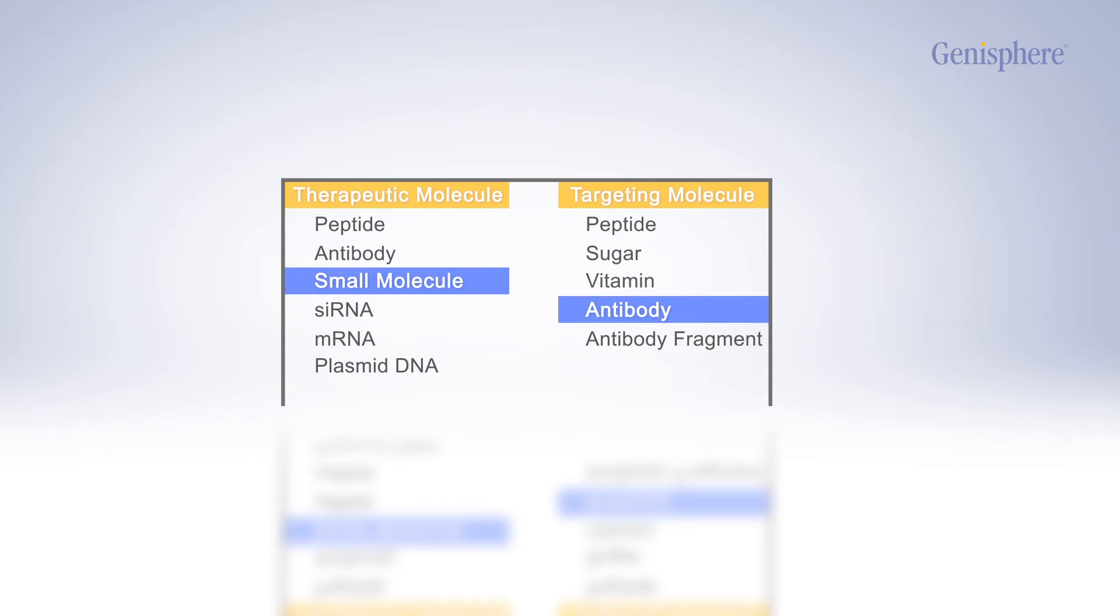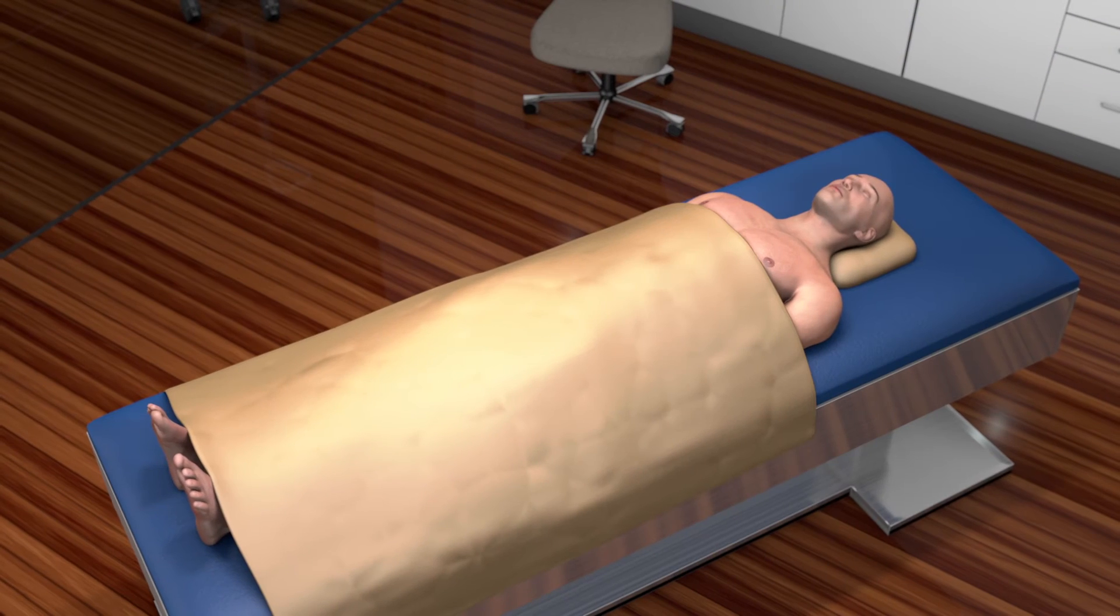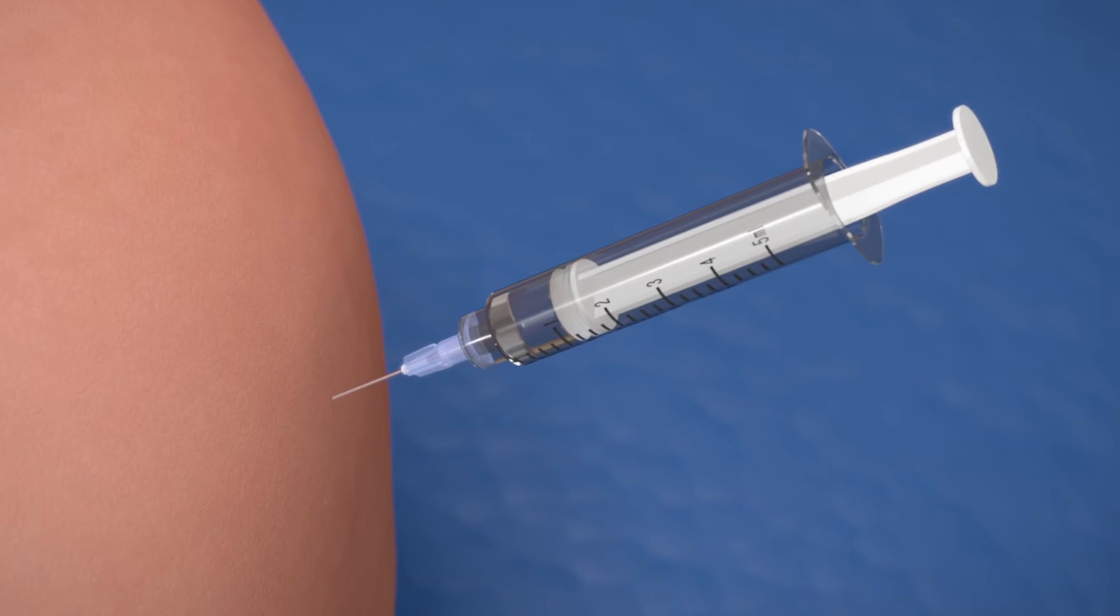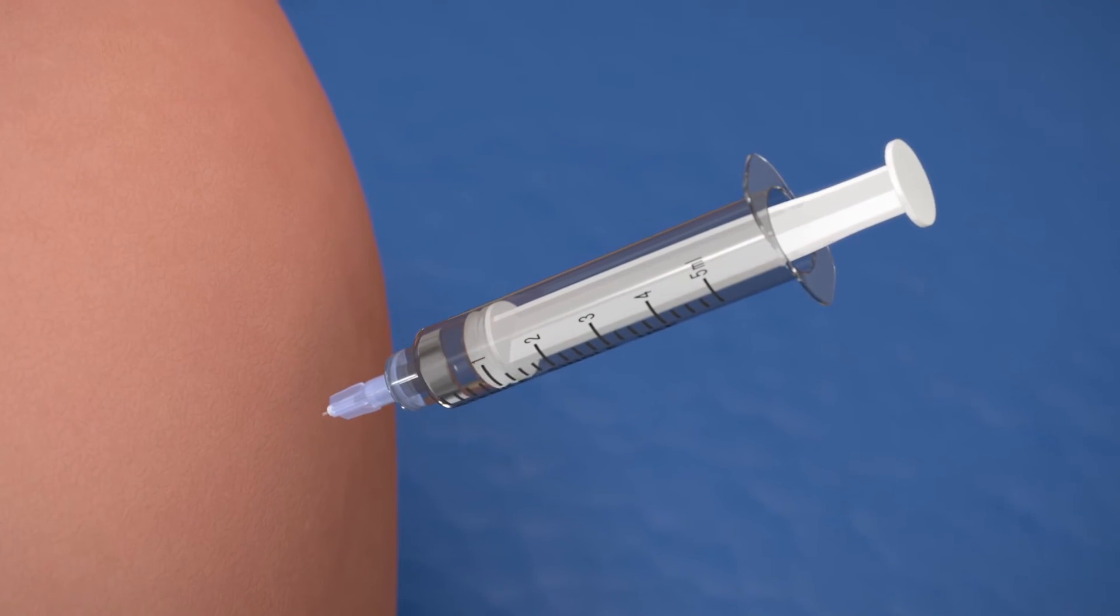Let's see 3DNA in action. For a given disease, a therapeutic molecule and targeting molecule are selected and formulated with 3DNA. This 3DNA formulation is then administered systemically to the patient via injection.